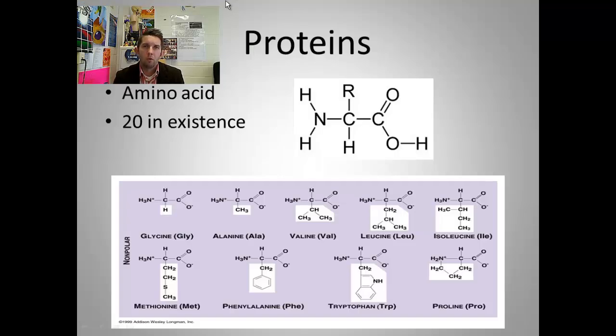All right, continuing on with our organic chemistry unit, we're on to proteins. Going through our organic compounds grid, we've been starting out with the basic unit, the monomer of proteins, which is a polymer, just like carbs, lipids, nucleic acids.